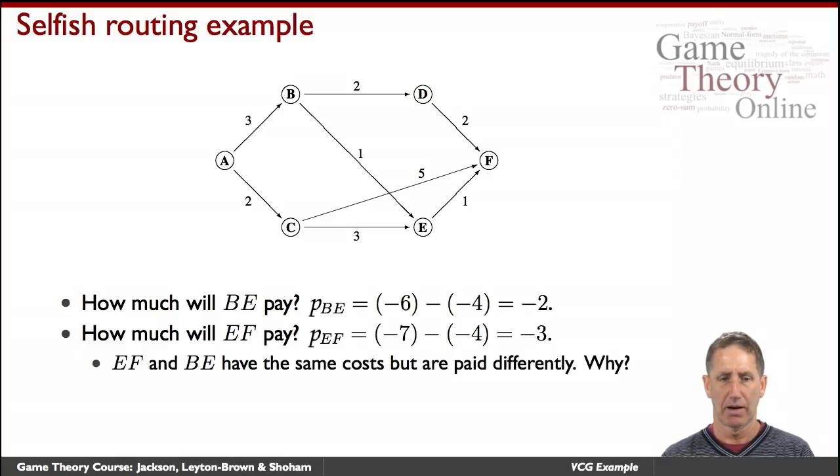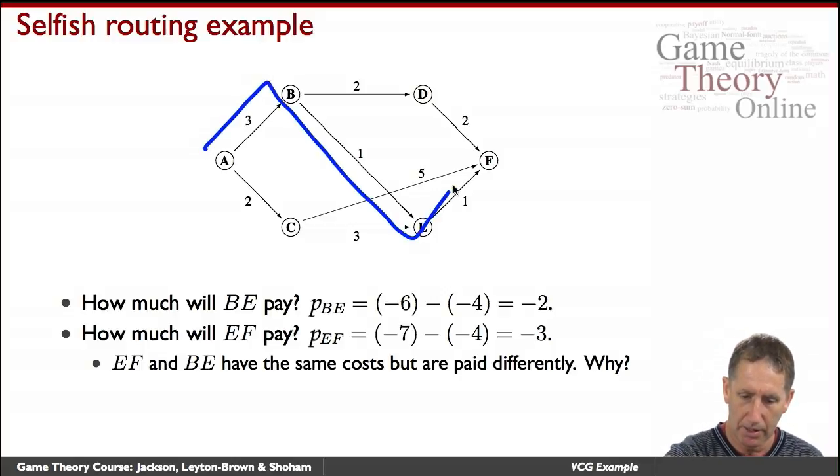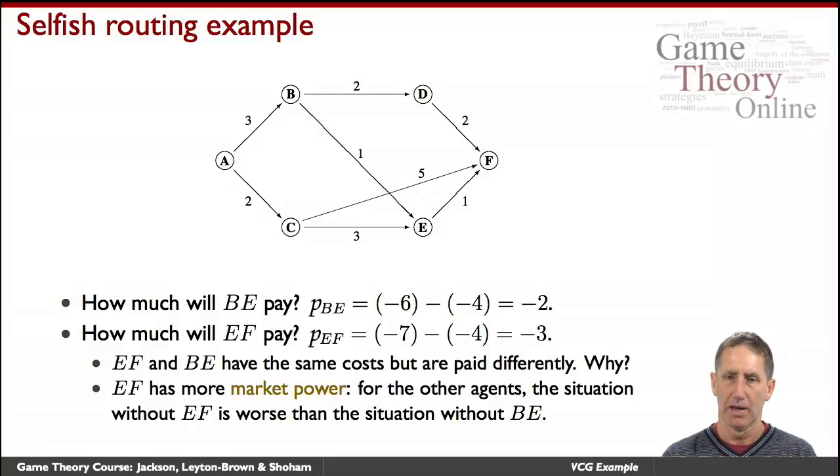So you could ask, why are these links' net payoffs different? Is that fair? Well, fairness is in the eye of the beholder, but the rationale for it is that they have different market power. The amount of social value they bring is different because without them, the outcome would be different to the population. And that's why they have different payments and different cost structures here. That's an example of VCG in operation.